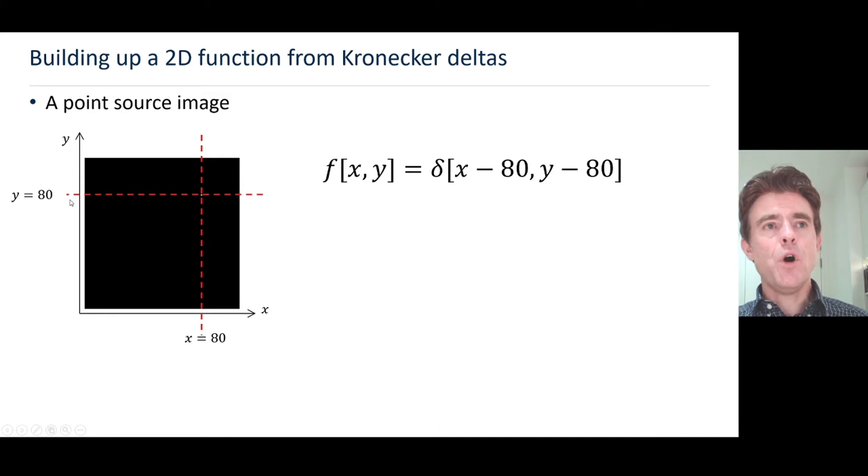We're saying for the simple case that if that point source is located at x equals 80 and y equals 80 in terms of the independent position variables, then to represent it we just take that simple delta function, shift it to the plus 80 position on the x-axis and shift it to plus 80 on the y-axis. That is it, we've got the representation of a point source image.